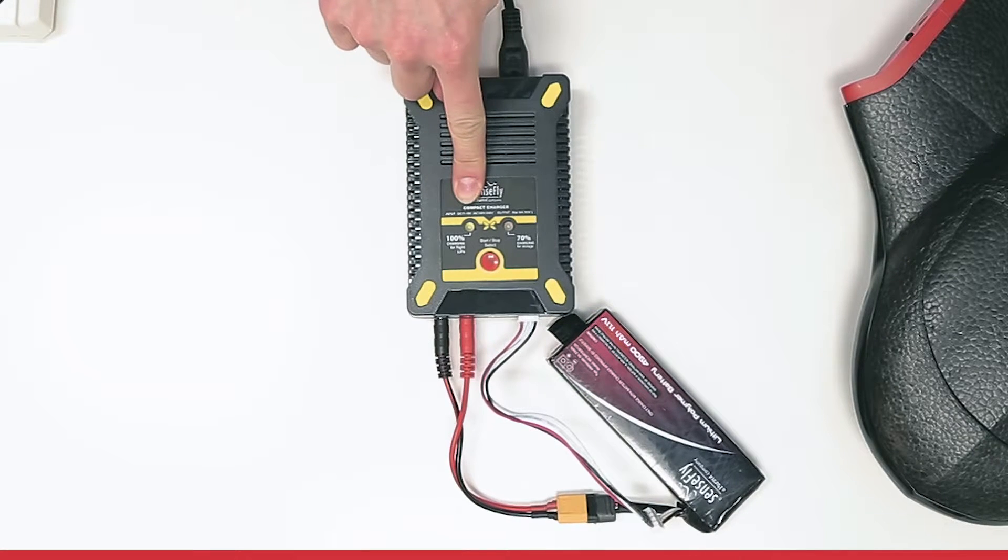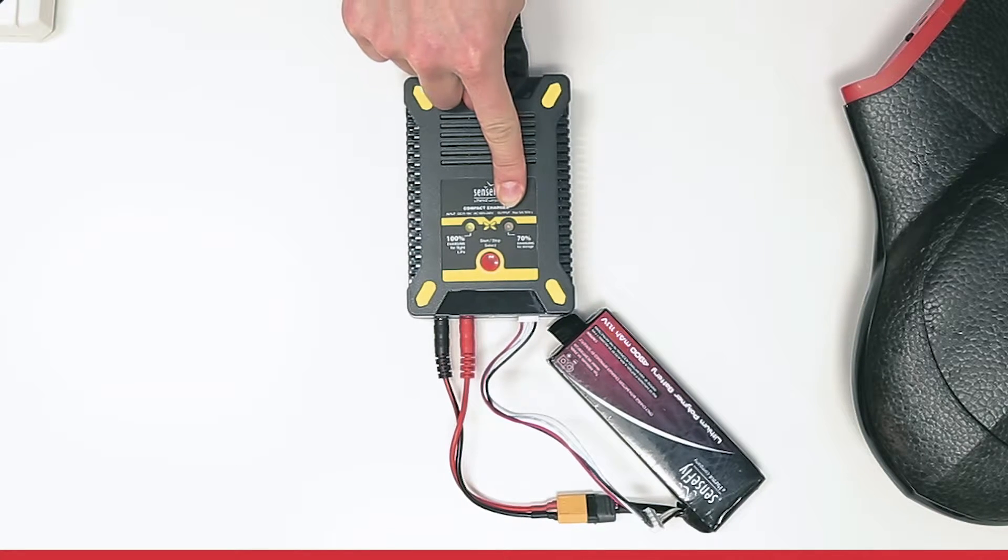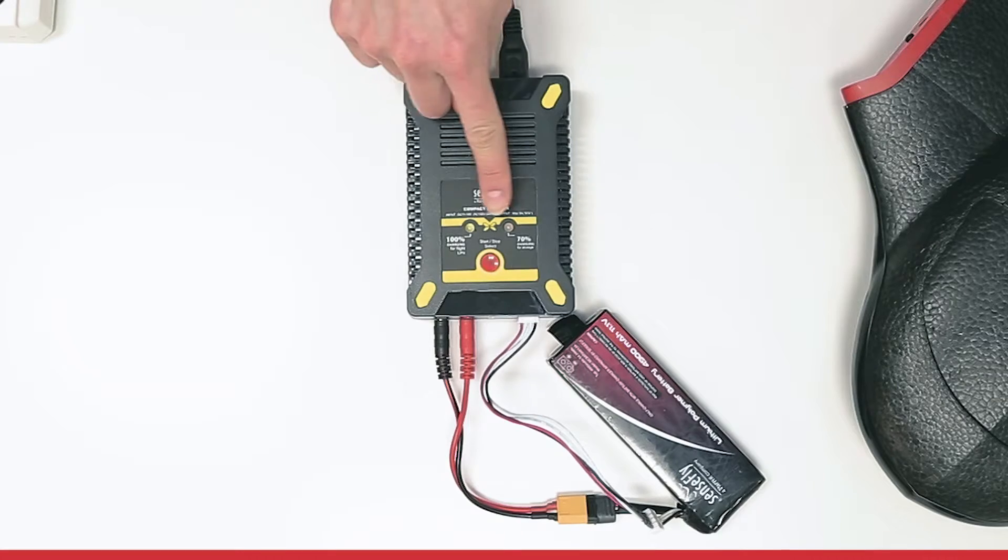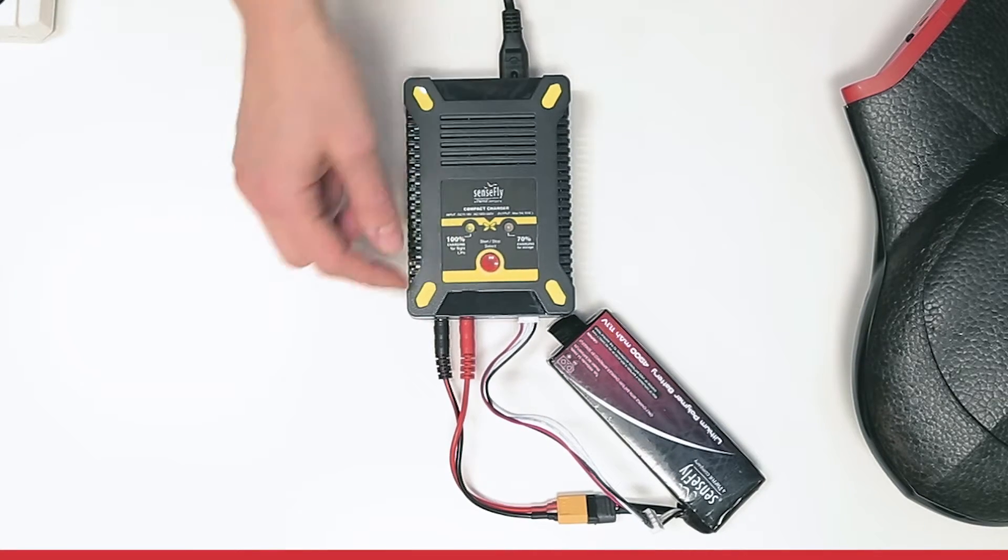Your charger has two charging modes: up to 100% before you go out to fly, or to 70% for storage. You can choose between the two by pressing the red button.